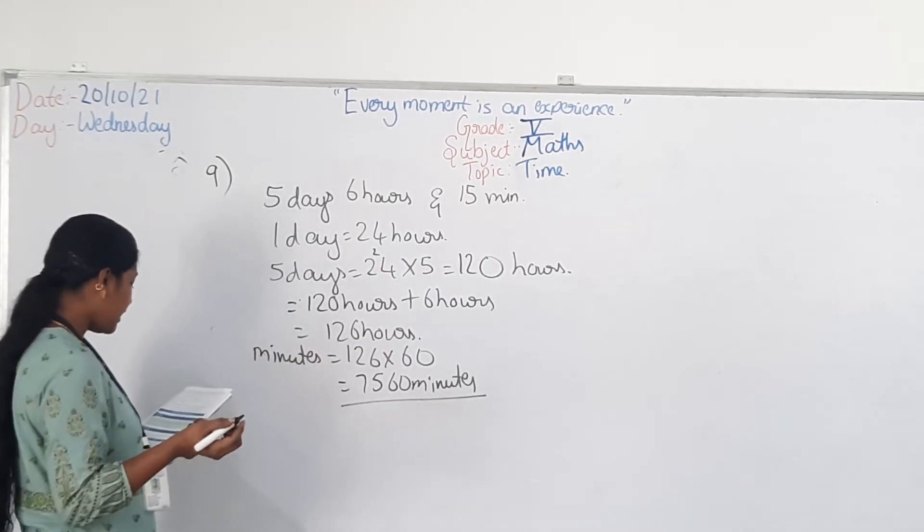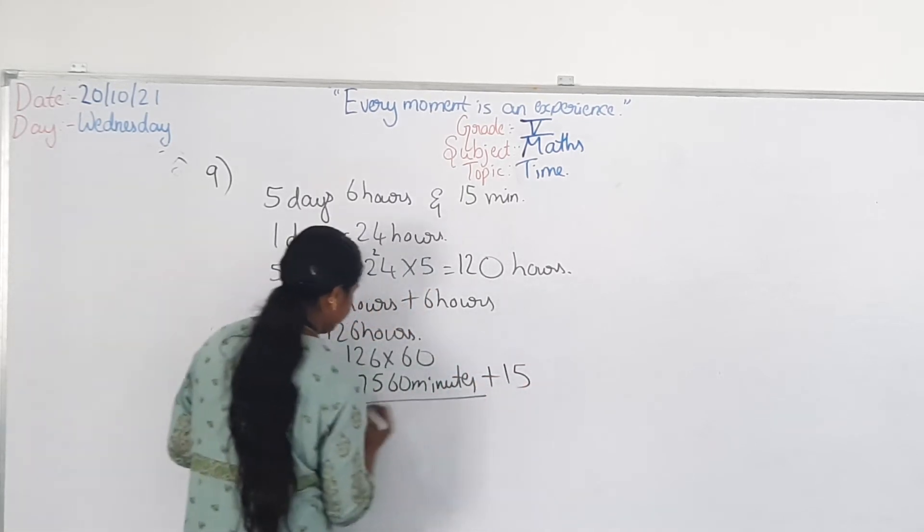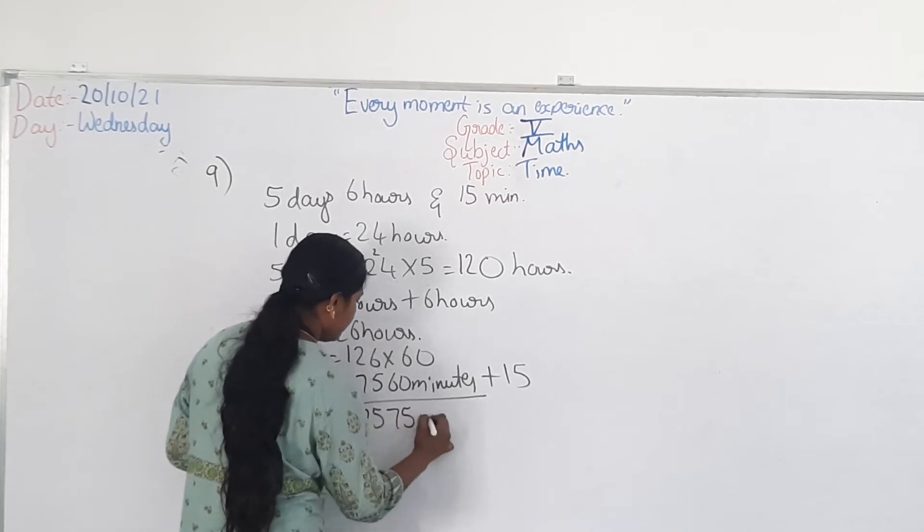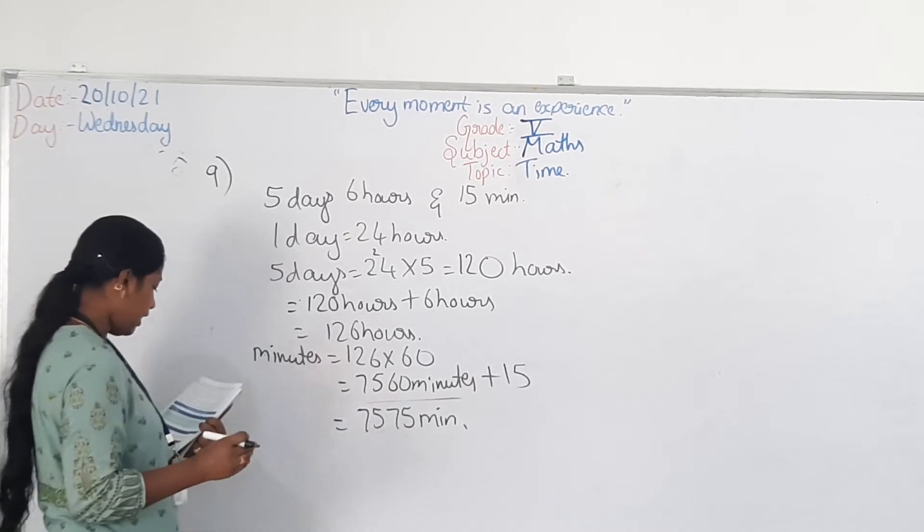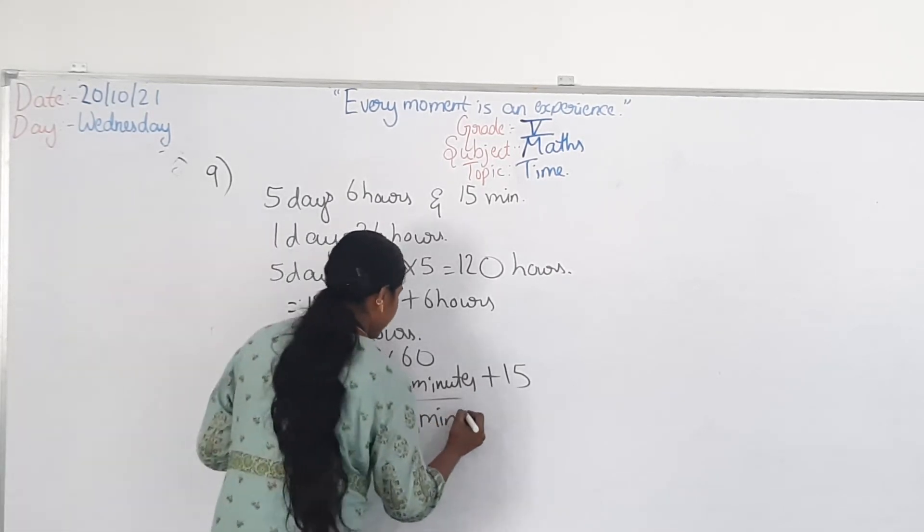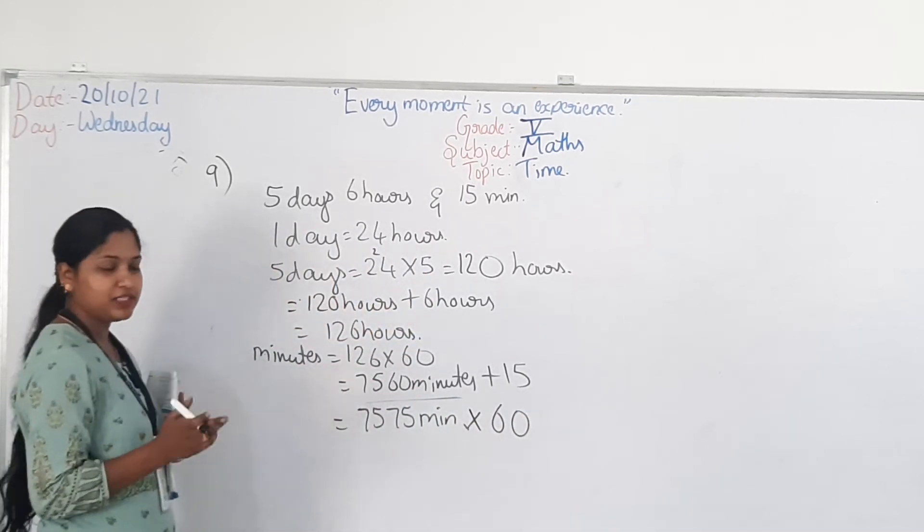How will you convert? Again you have 15 minutes here. Plus 15 you write. So, that will be 7575 minutes. Now you have to convert this into seconds. How will you convert? Again you will multiply by 60. So, seconds, 1 minute equals 60 seconds.